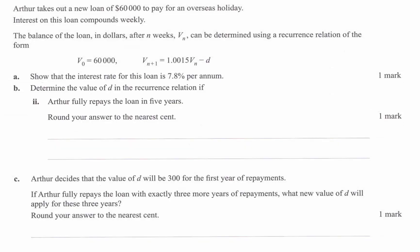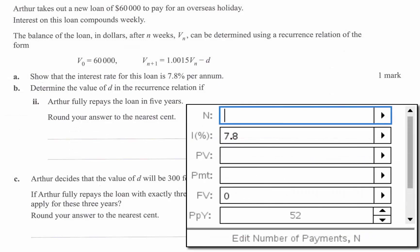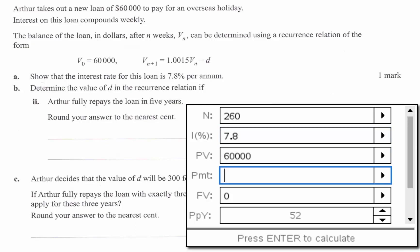So I've got the finance solver open. I've got 52 for P/Y because it is compounding weekly. And 52 times 5 is the number of periods. The present value of the loan is $60,000. The payment is unknown. I want to bring the future value to zero to fully repay. And I get negative 278.8577 and so on.